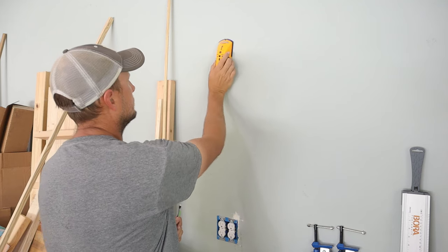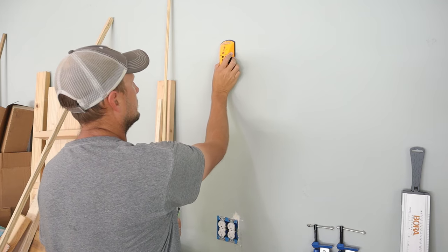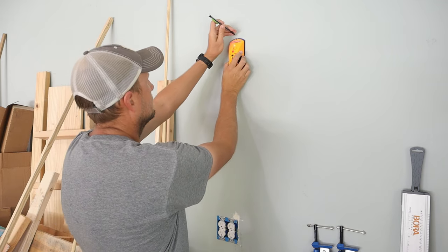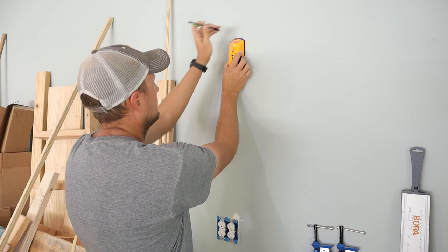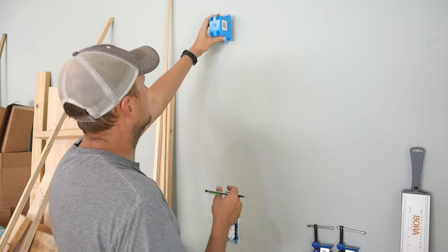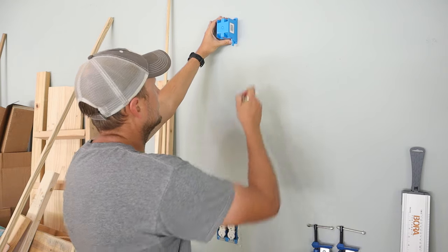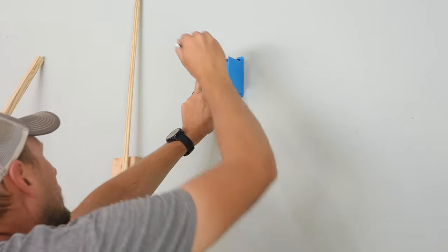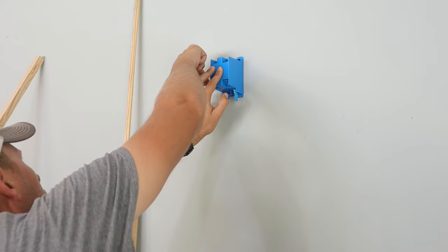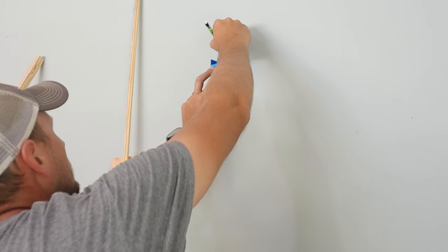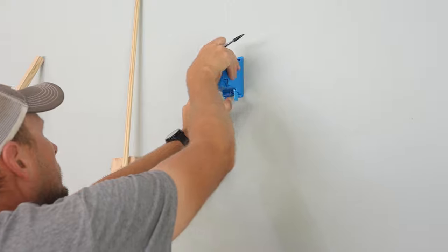I'm gonna start by taking a stud finder and going in the area of approximately where I'm gonna want the outlet to be to figure out where any studs may be. Once I found a stud in the wall, I can take my electrical outlet box and trace around it for the hole that needs to be cut. I'll bring it up right next to the stud. That way I know when I'm pulling my wire it's a straight pull up.